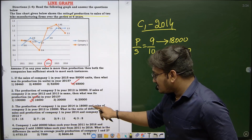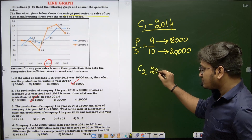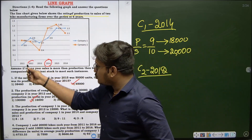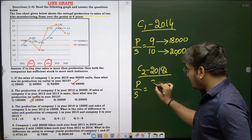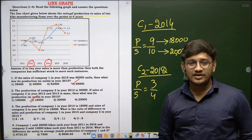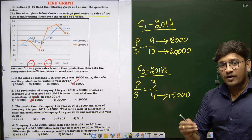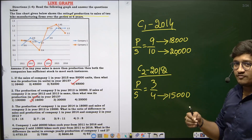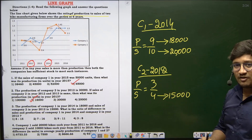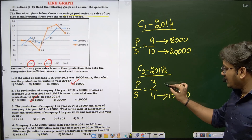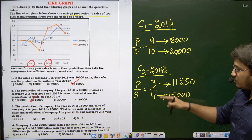The sales of company 2 in 2012 is given as 15,000. Company 2 in 2012 has a ratio of 0.75, which equals 3 by 4. Sales means 4 parts equals 15,000, so each part is 3,750 and 3 parts — the production — equals 11,250. We now know both production and sales for company 1 in 2014 and company 2 in 2012.